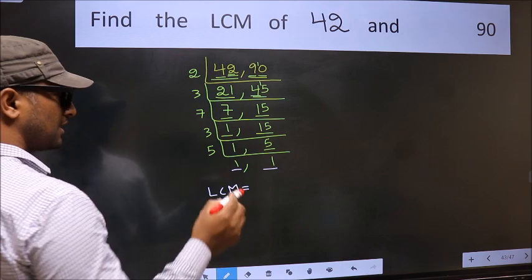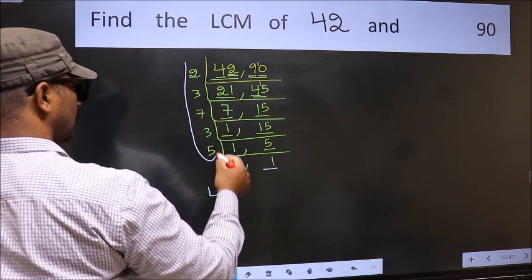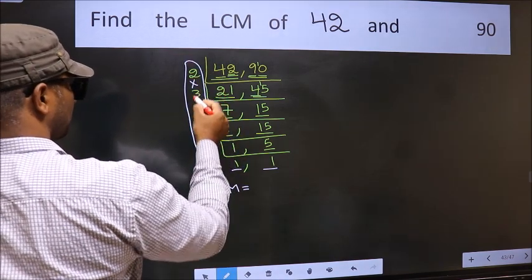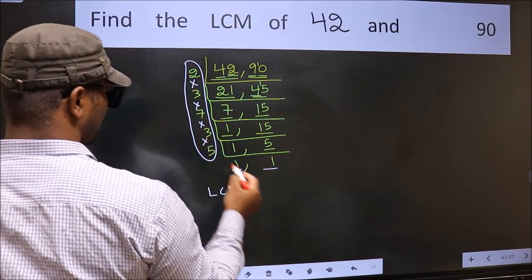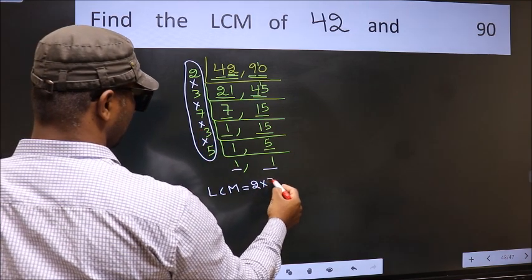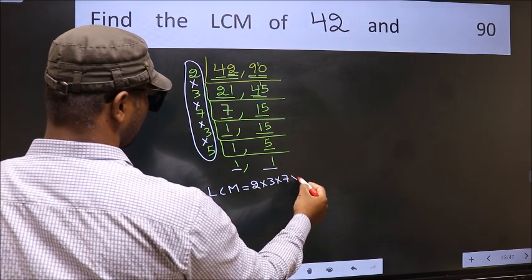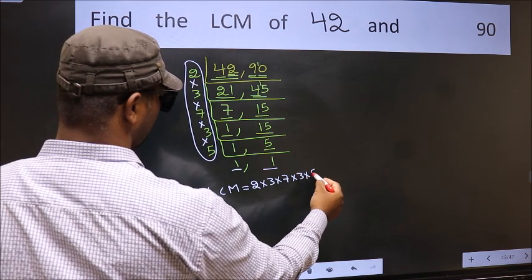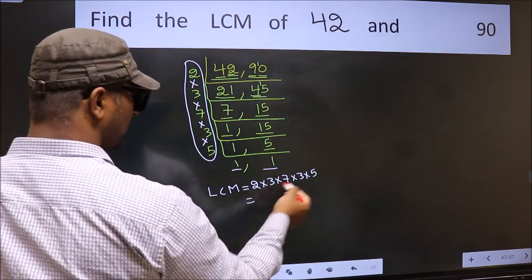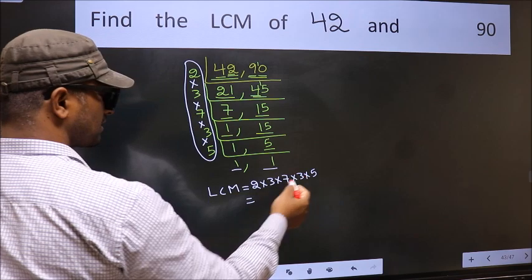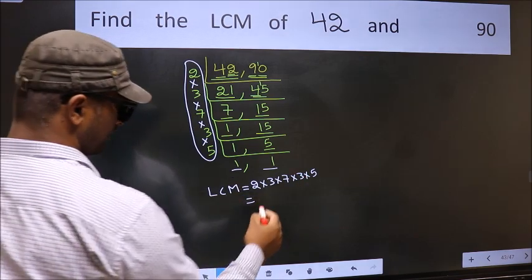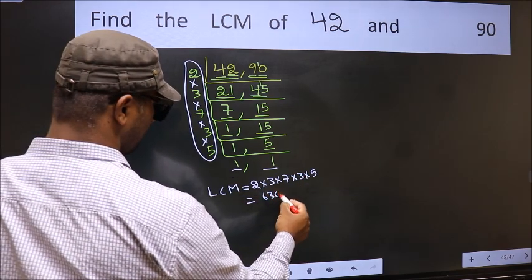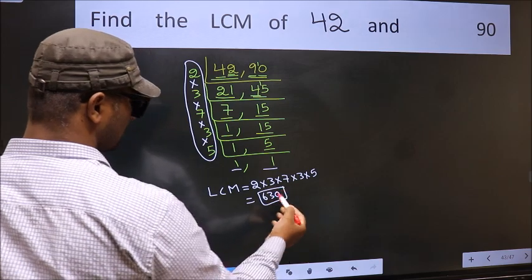LCM is the product of these numbers. That is 2 times 3 times 7 times 3 times 5. When we multiply these numbers we get 630 as our LCM.